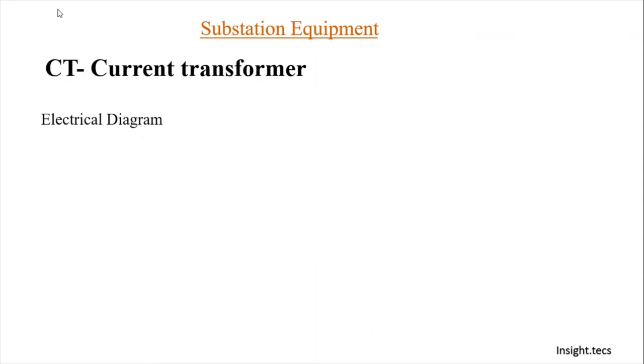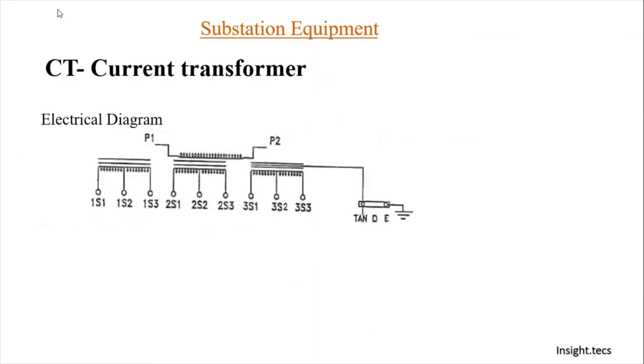Now let us understand the electrical diagram of a current transformer. Shown over here is the electrical diagram of a current transformer. P1 and P2 represent primary winding, and S represents the secondary winding. As you can see over here, the secondary winding is having 3 cores. This is core 1, this is core 2, and this is core 3. Each individual core has 3 tappings: 1, 2, and 3. 1S1 represents the core and this 1 represents its tapping. So 1S1 means it is the first tapping of the first core, 1S2 means it is the second tapping of the first core, and 1S3 means it is the third tapping of core 1. Similarly, it can be understood for core number 2 and core number 3 as well.